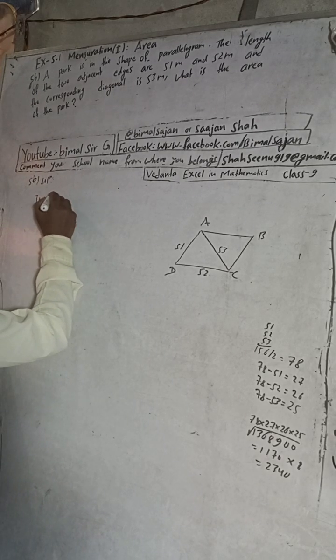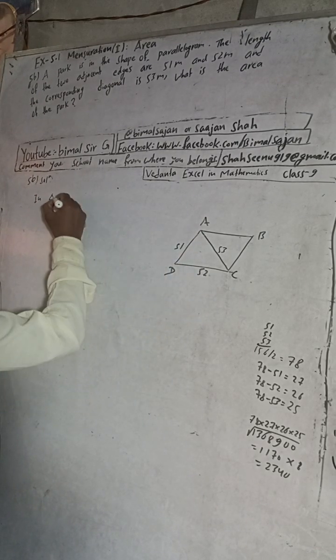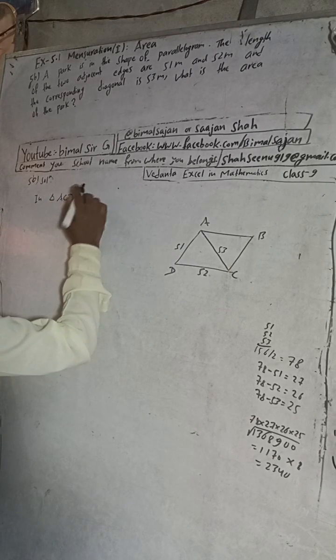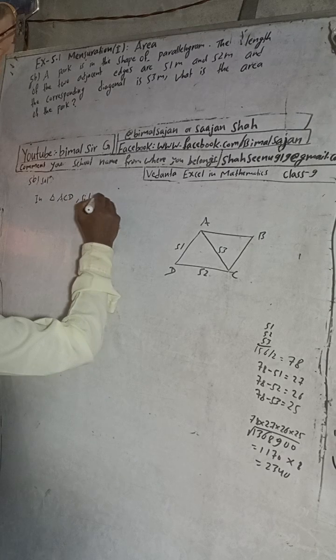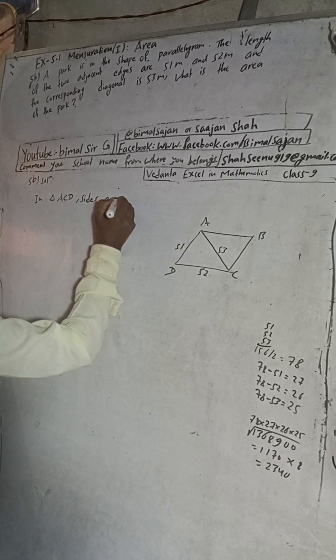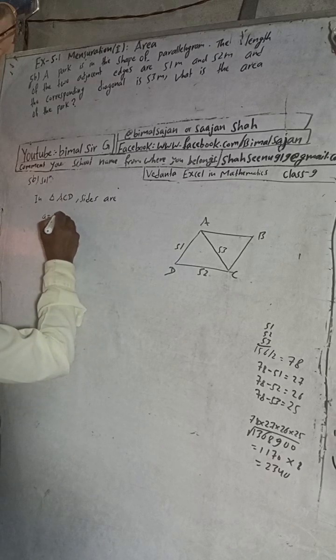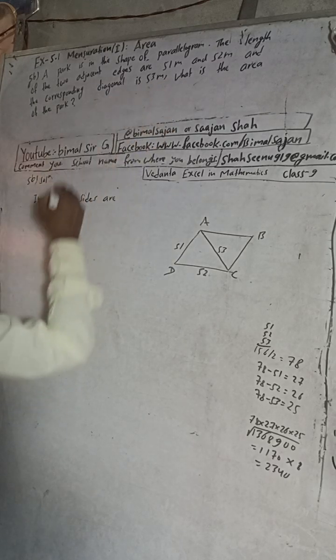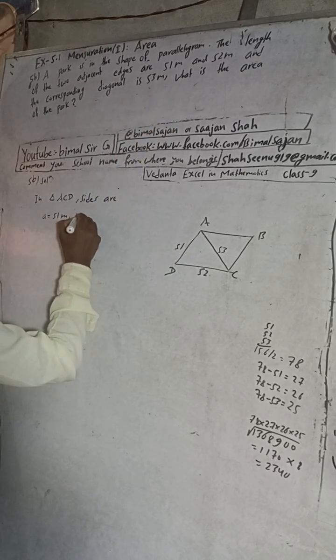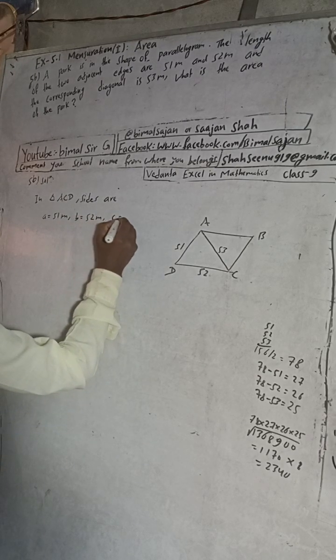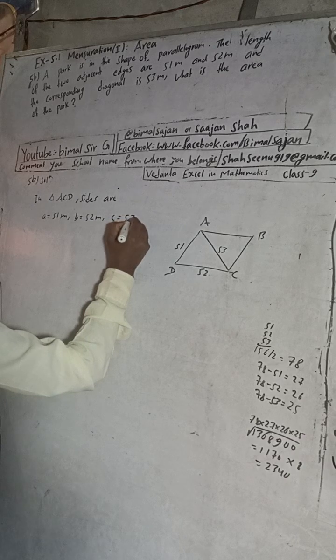In triangle ACD, sides are: suppose this is A, I will take as 51 meter. And B is equal to 52 meter. C is equal to 53 meter.